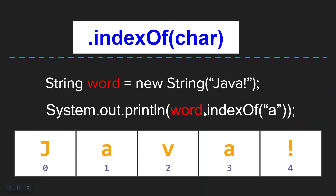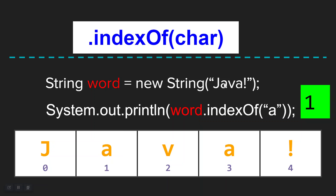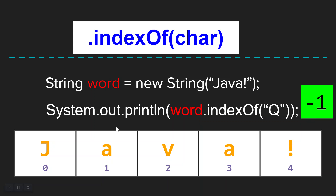Now if we did indexOf('a') - even though A appears twice, at index one and three - it's going to give you the first time it appears. So that would return one, because A is at index one in that string. And what do you think is going to happen if we did word.indexOf('q')? If you call indexOf with a character that doesn't actually appear in the string, it returns negative one. There is no negative one index in a string - the very first character is always at zero. So if you get negative one, you know something has gone wrong.